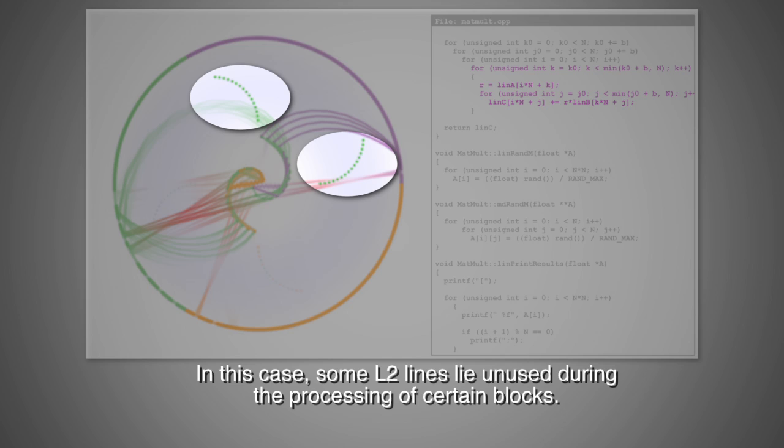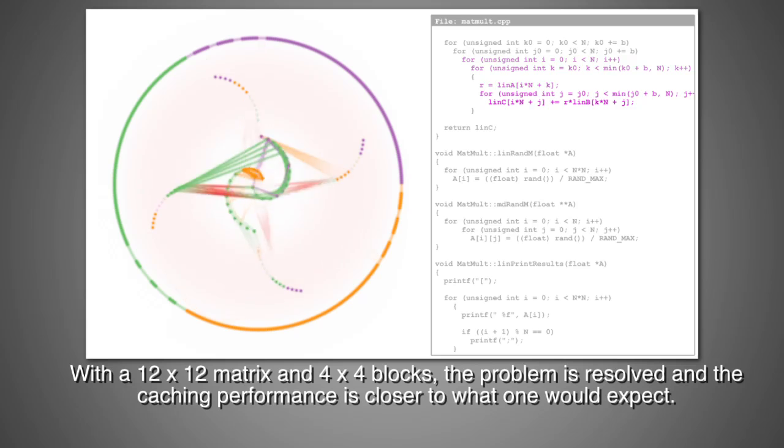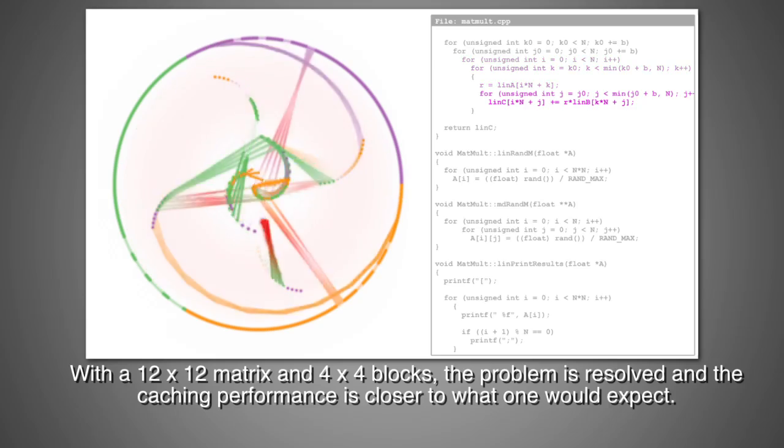In this case, some L2 lines lie unused during the processing of certain blocks. With a 12x12 matrix and 4x4 blocks, the problem is resolved and the caching performance is closer to what one would expect.